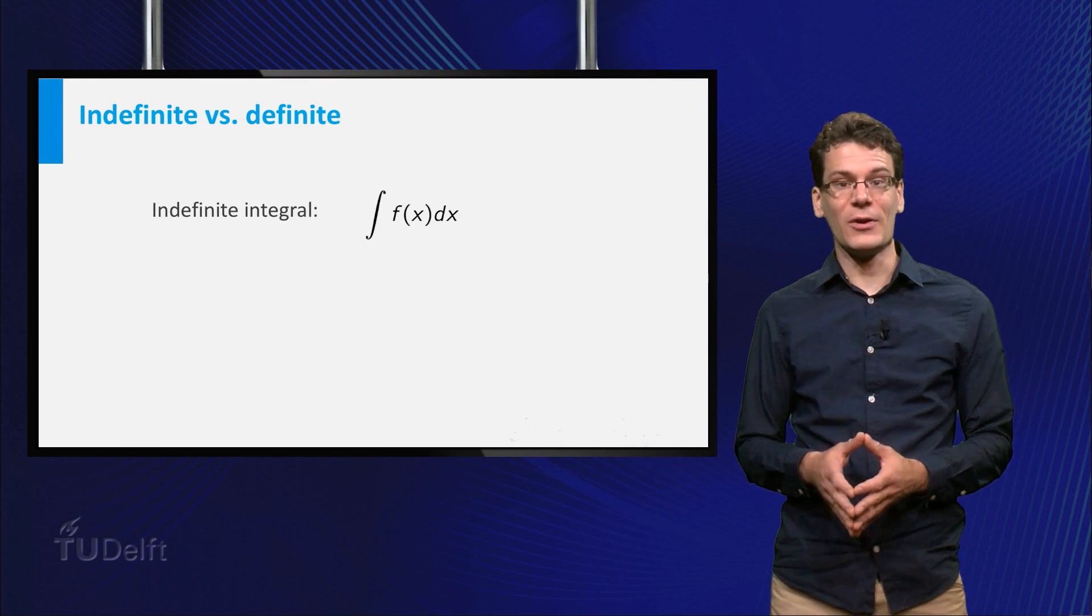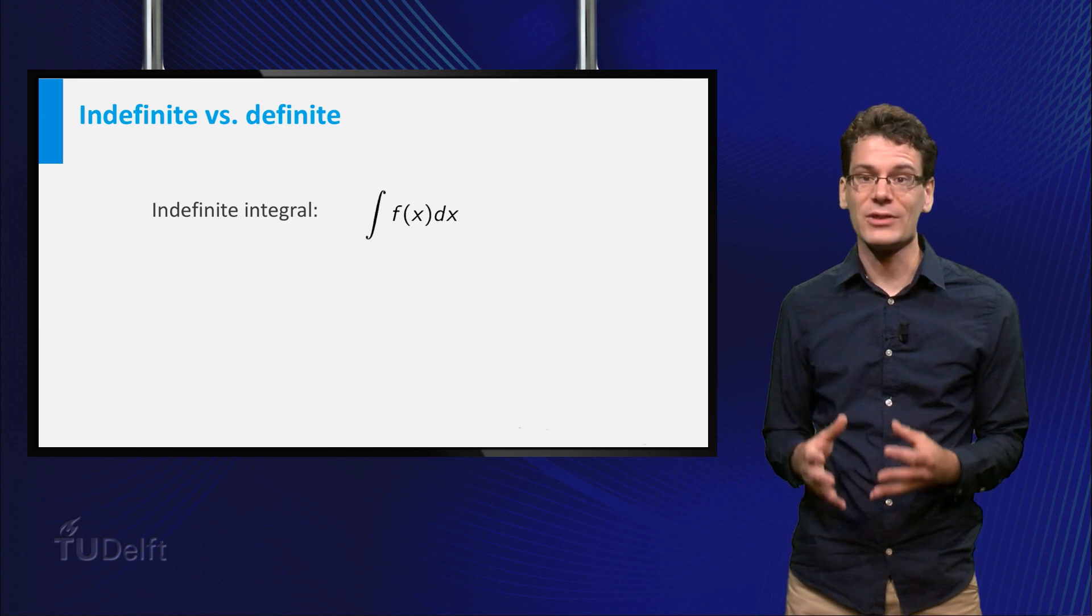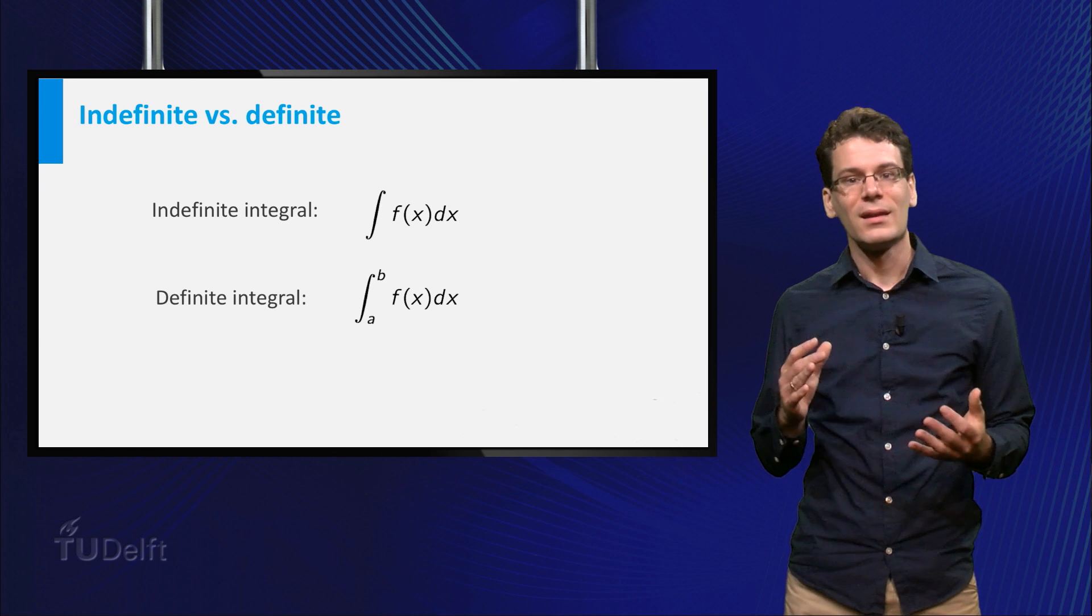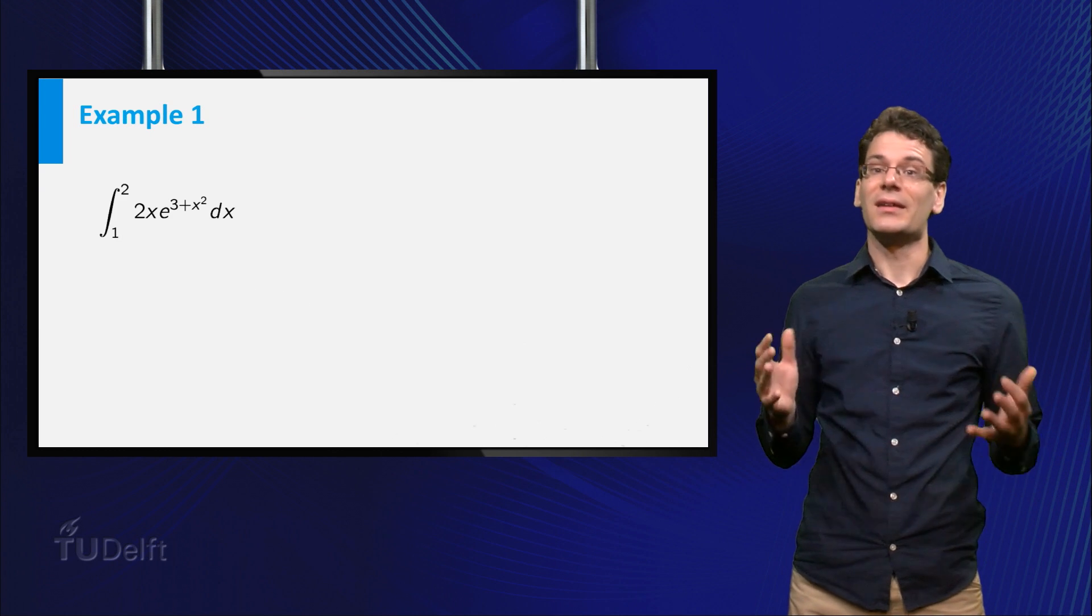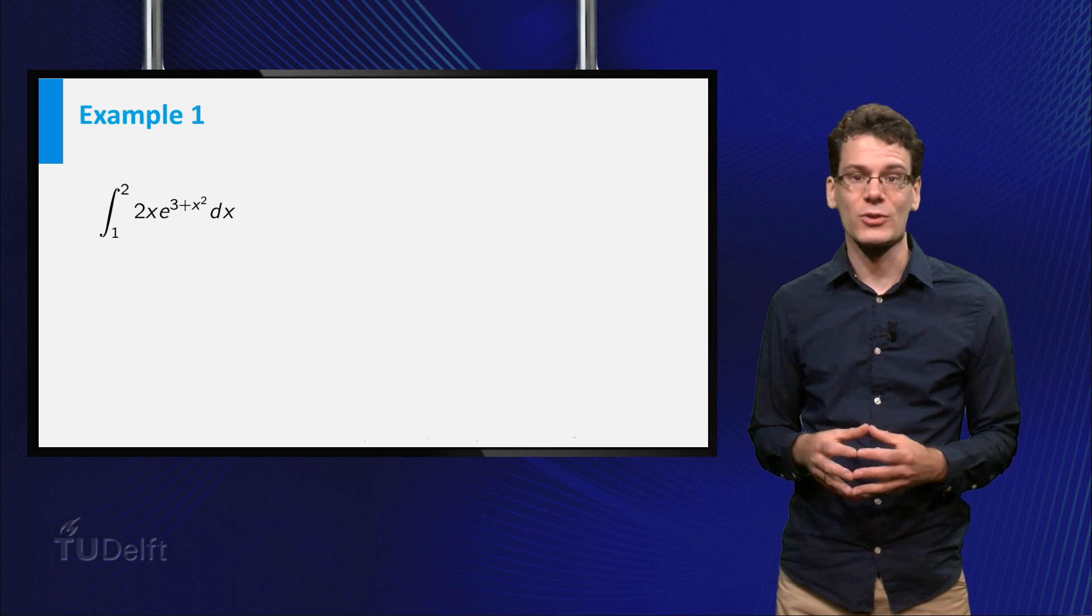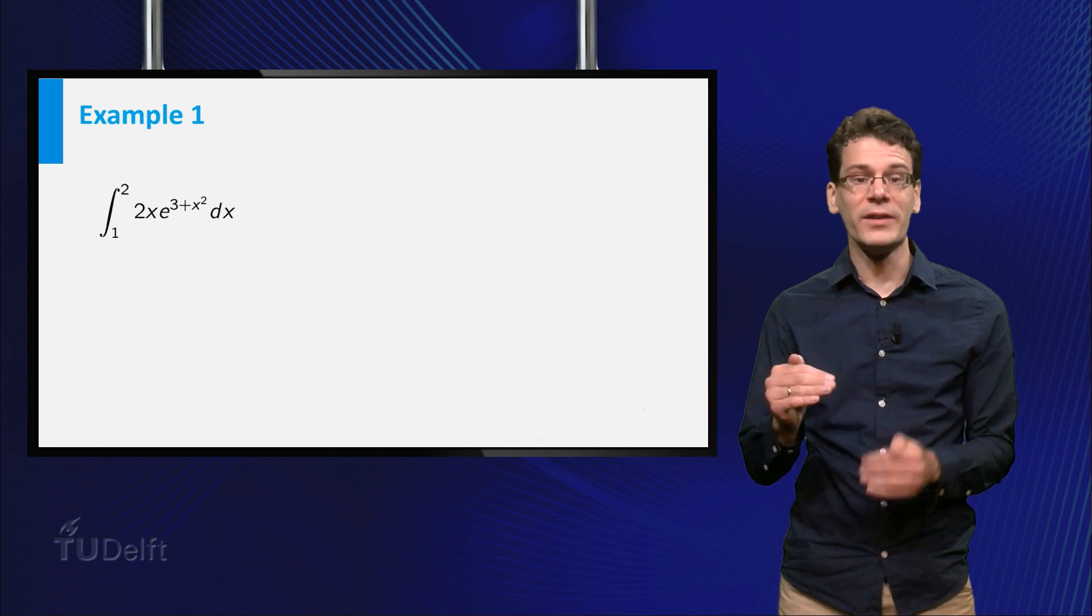In this video I will show you how to use substitution in the case of a definite integral, an integral with boundaries. Let's consider an explicit example, the integral of 2x times e to the power 3 plus x squared, where x ranges from 1 to 2.